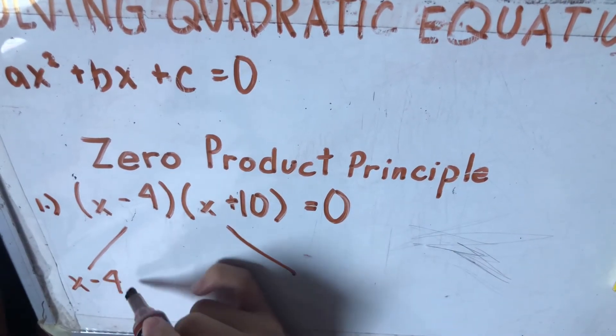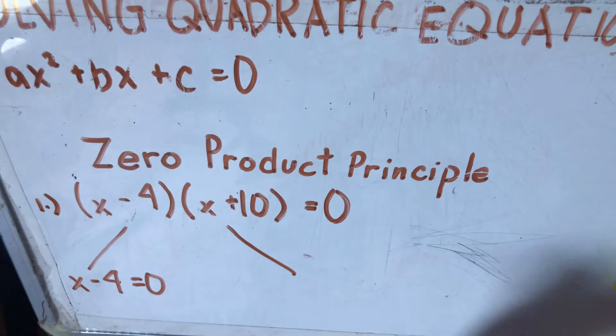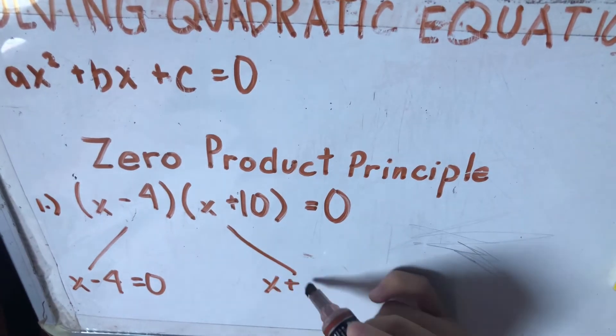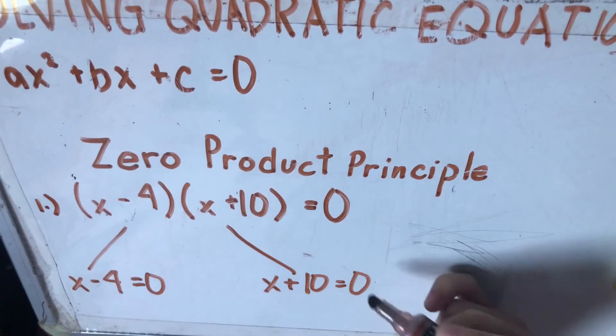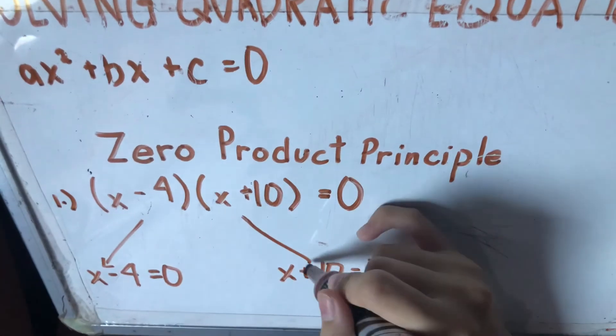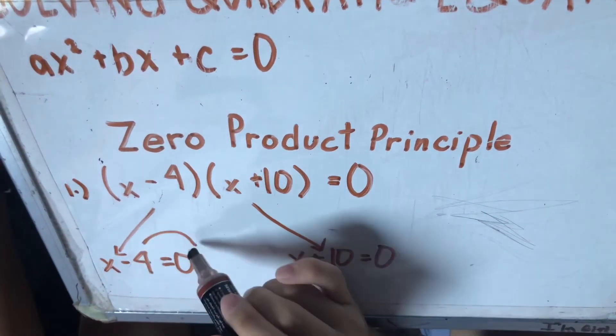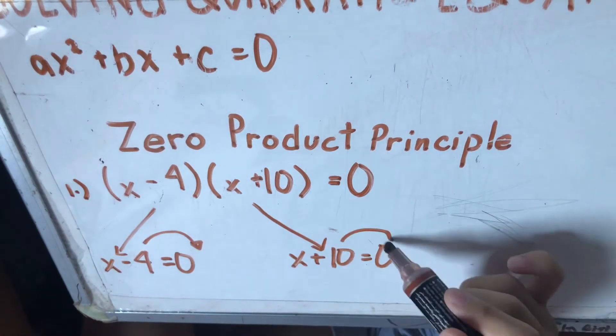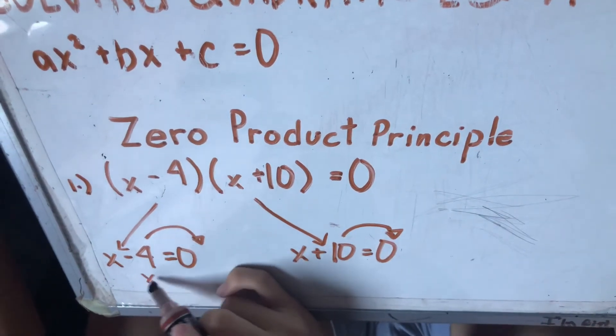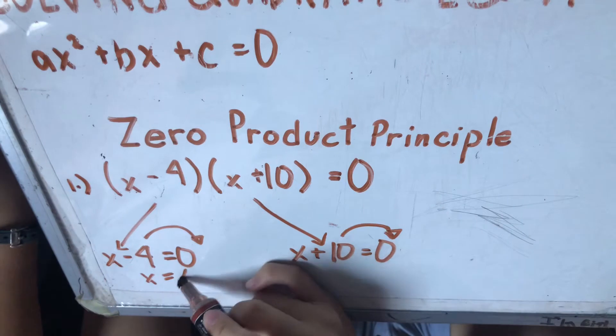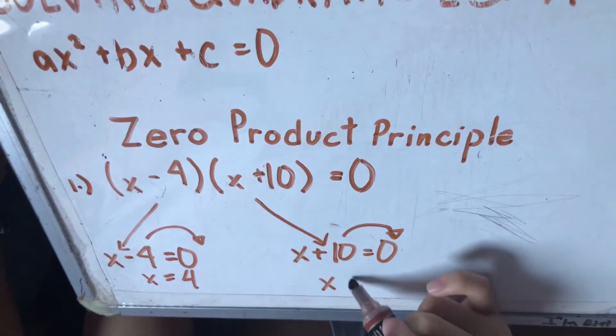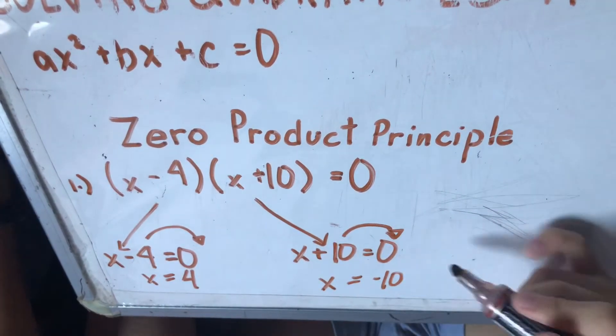So, x - 4 = 0. Tapos, x + 10 = 0. So dito, para mahanap value ni x, lipat mo lang si negative 4 at si 10. So mahanap ating value nila is 4 at saka negative 10.